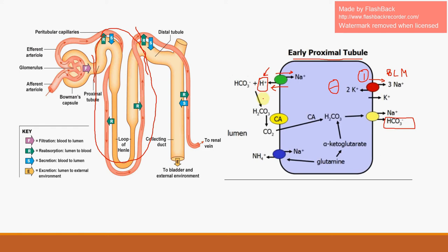The excreted proton combines with a bicarbonate anion to form carbonic acid, and through the help of carbonic anhydrase, this carbonic acid re-enters the cell. Intracellular carbonic anhydrase breaks it down into bicarbonate and H⁺, with the excess H⁺ excreted as ammonium. Net result: one extra bicarbonate is brought into the body. In type 2 RTA, one or more of these steps is impaired, preventing bicarbonate reabsorption.